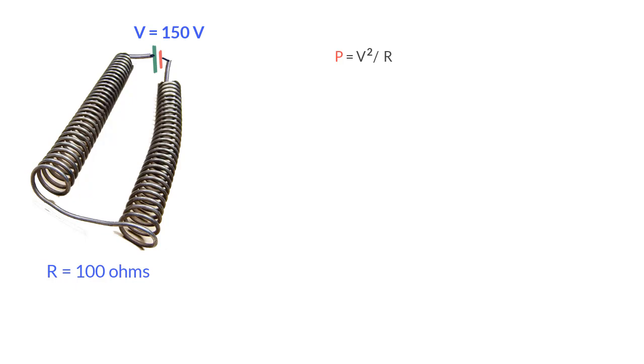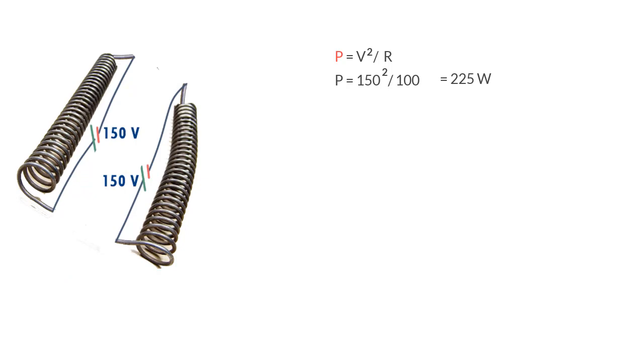This is simple. We use the formula P is equal to V square by R and calculate power generated as 150 square by 100 that equals 225 watt. Now comes a tricky question. What if we divide this wire into two equal parts? What power can be generated from each if we subject them to the same voltage of 150 volts?